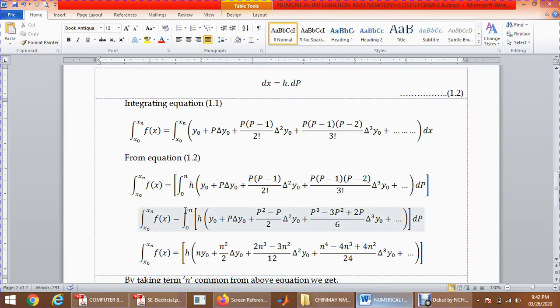Integrate the right-hand side and substitute the upper limit. Write h as it is. Now y0 integration dp, since it's a constant, when we substitute the upper limit it becomes n·y0. Integration of p∆y0 dp gives p²/2, and when I substitute the upper limit, I will get n²/2 ∆y0.